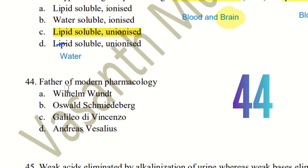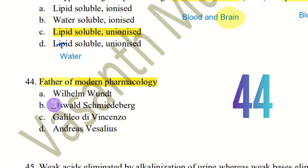Question 44: Who is the father of modern pharmacology? The choices are Wilhelm Wundt, Oswald Schmiedeberg, Gallinio D. Vincenzo, and Andreas Vesalius. The right answer is Oswald Schmiedeberg — he is regarded as the father of modern pharmacology.